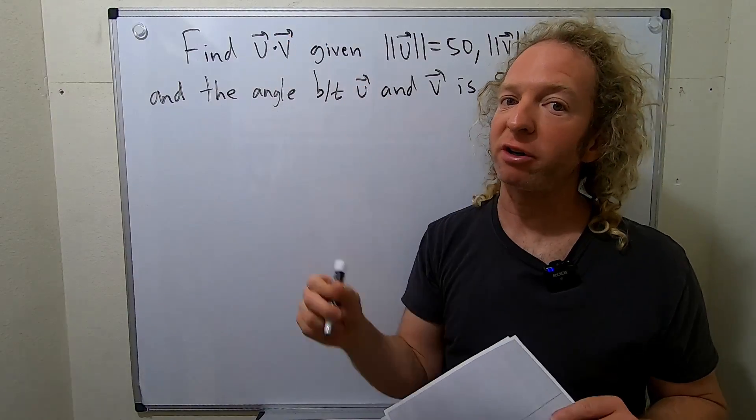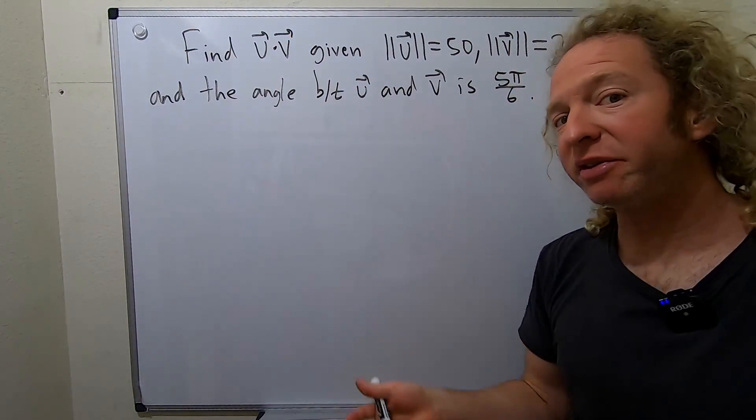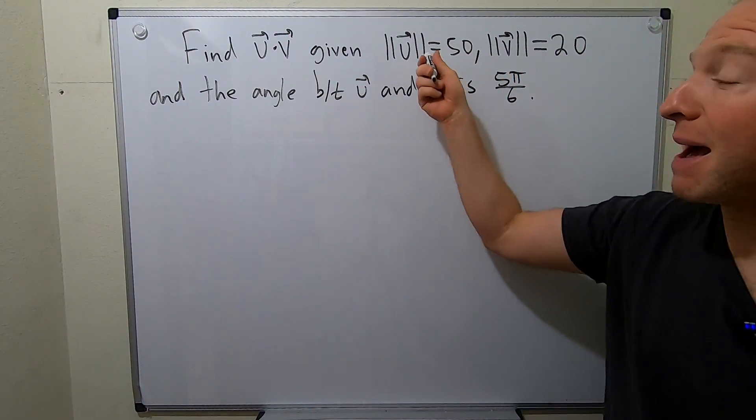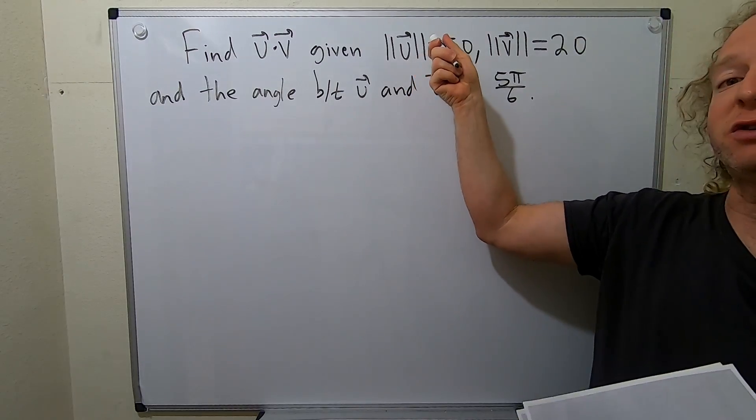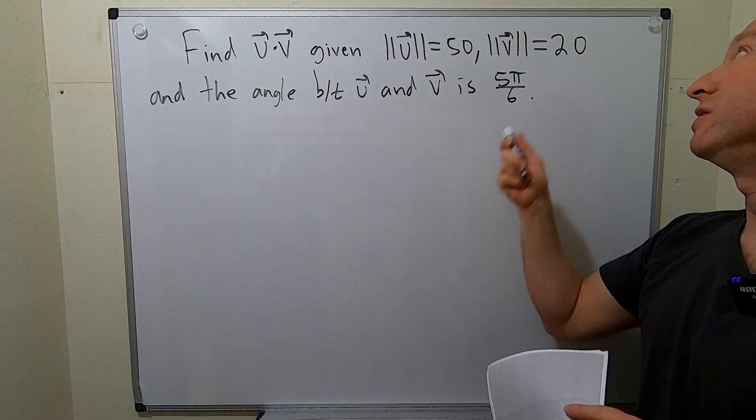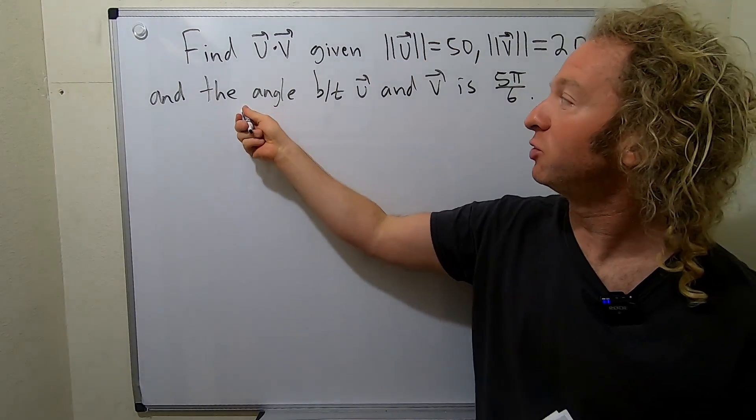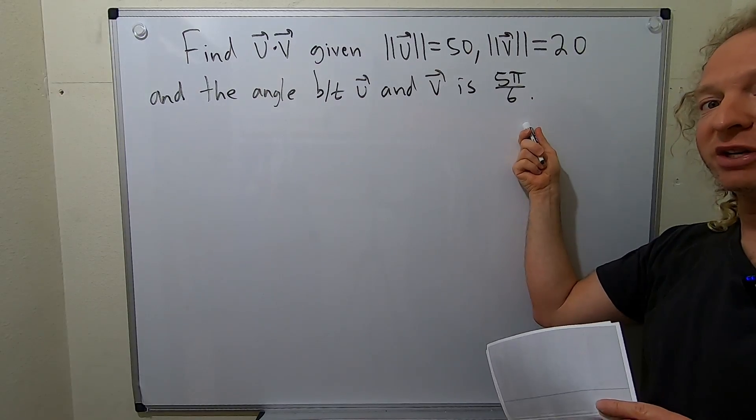We have to find u dot v, so the dot product of two vectors. However, we're not given the vectors. We're given the magnitude, so we're given that the magnitude of u is 50, and the magnitude of v is 20. And then we're given the angle between them to be 5π over 6.